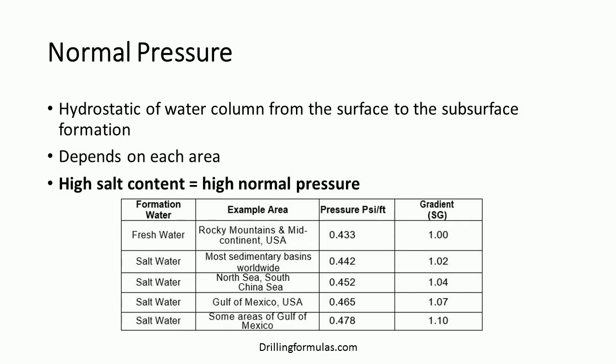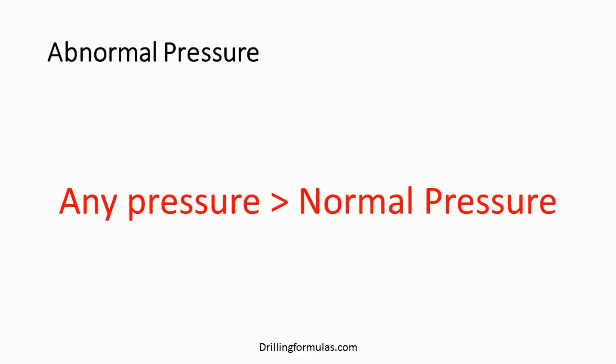The table demonstrates the average normal pressure gradient based on several areas. Abnormal pressure is the pressure greater than normal pressure. Generally, abnormal pressure zones are good reservoirs which oil companies are looking for, and this kind of pressure has the highest potential to cause well control problems. Subnormal pressure is the pressure that is less than normal pressure, and it possibly causes lost circulation problems.